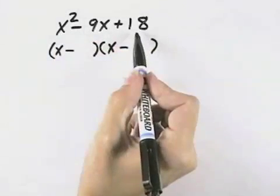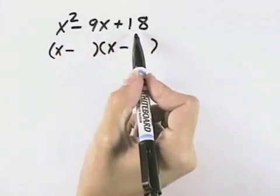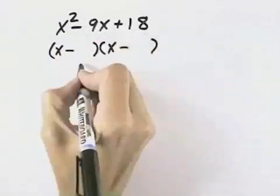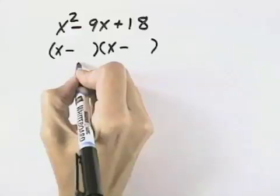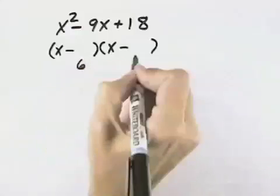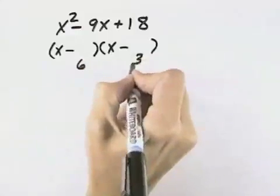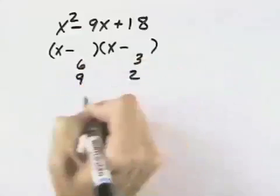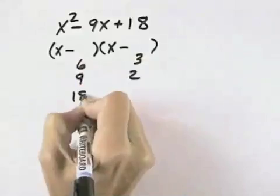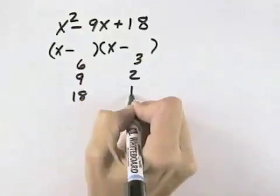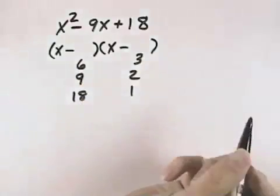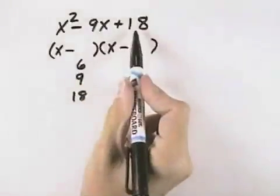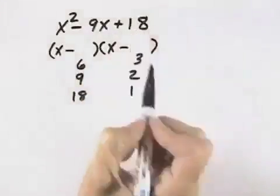Now, the last terms need to give us 18. So we could look at 6 times 3, 9 times 2, or 18 times 1 — all different ways to get 18 with that product.